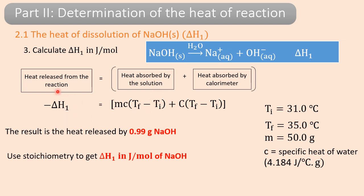Remember, the number you get from this calculation is the heat released by the reaction — released because you have seen the temperature of the solution increase. The reaction released heat to the solution. This heat released is only from this amount of sodium hydroxide, so use stoichiometry to convert delta H into per mole of sodium hydroxide. That gives you delta H for this reaction.